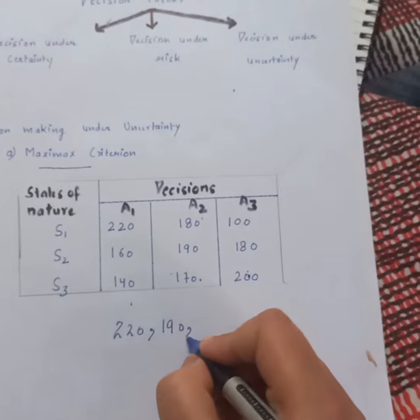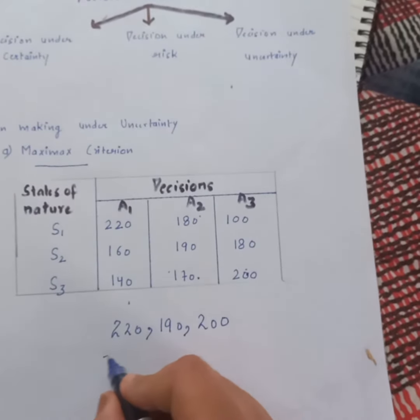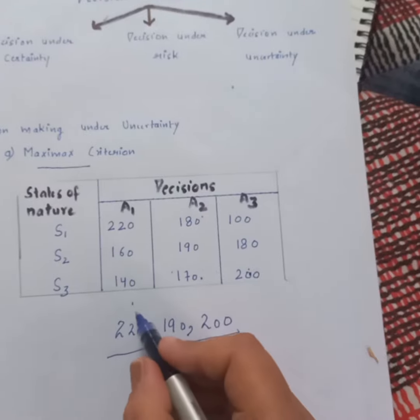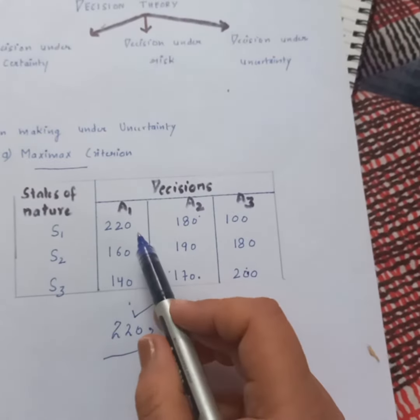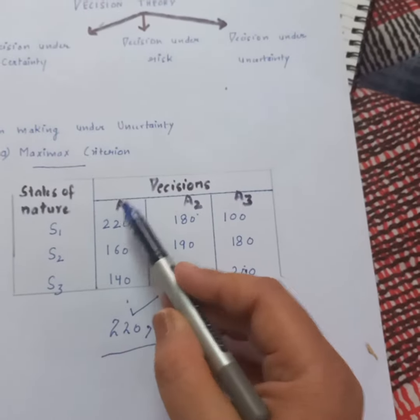So, maximum of the maximums, which is 220. So, according to Maximax criteria, alternative A1 is selected.